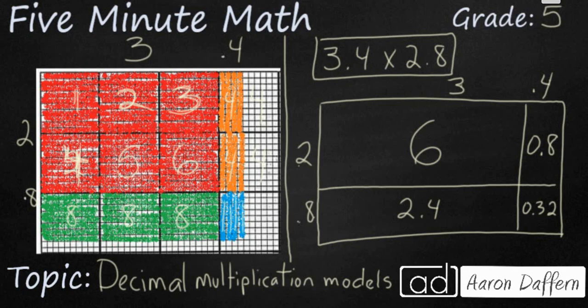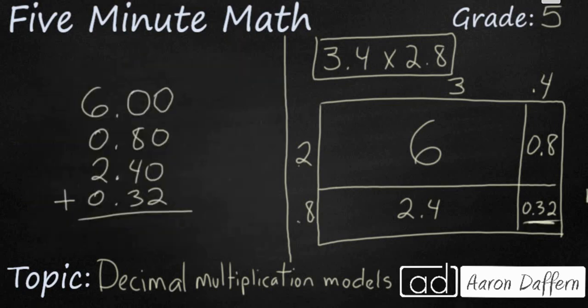Now to get my answer, all I need to do is I need to add these 4 up. Now the tricky part on this is we need to make sure we line up the decimals. Notice how I've written everything over here on the left side all the way to the hundredths place. I did that just to make sure my decimals lined up. The 6 turns into 6.00 and so on here.